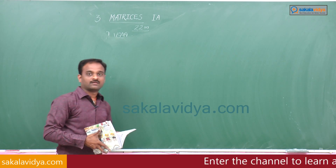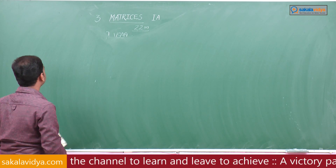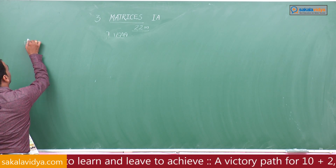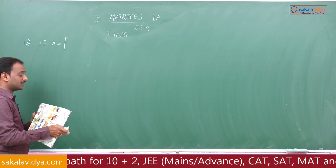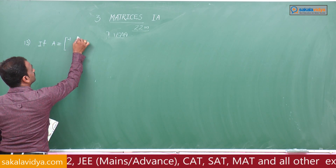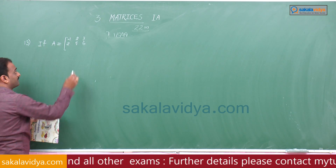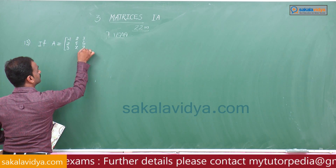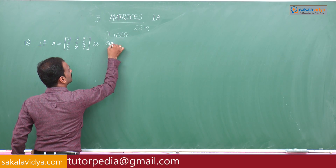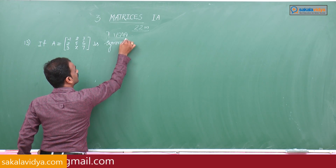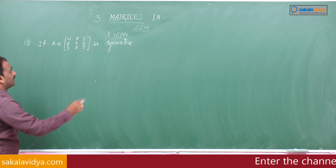Next problem, number 13: if a matrix capital A is given by A equals minus 1, 2, 3, 2, 5, 6, 3, x, 7 and is symmetric, then find the value of x.